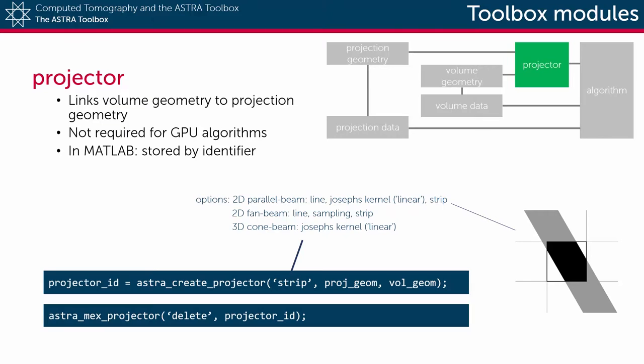When the projector is no longer needed, the function astra_mex_projector with argument delete can be called to remove it from memory.